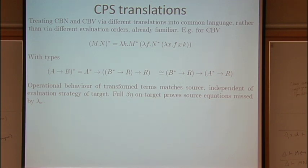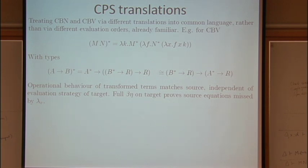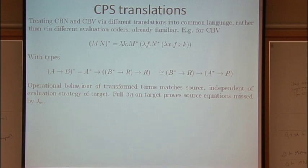It's continuation passing style. There's a well-known translation of call-by-name and call-by-value programming languages into the lambda calculus, which adds to every function a continuation — another function — so that you take an argument and then you take a second argument, which is a continuation function: what you're going to do with the result.